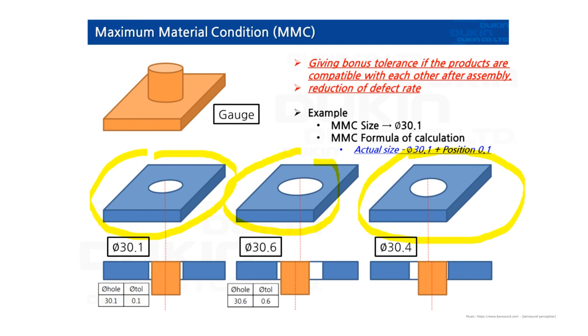So therefore 0.6 position tolerance is the final given. So basically giving bonus tolerance if the products are compatible with each other after assembly. So it leads reduction of defect rate.